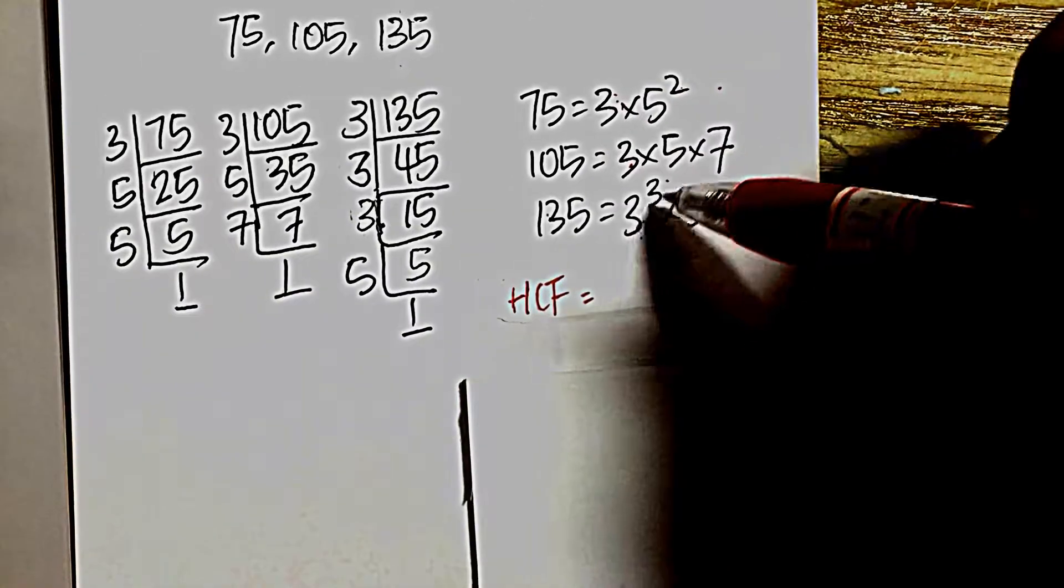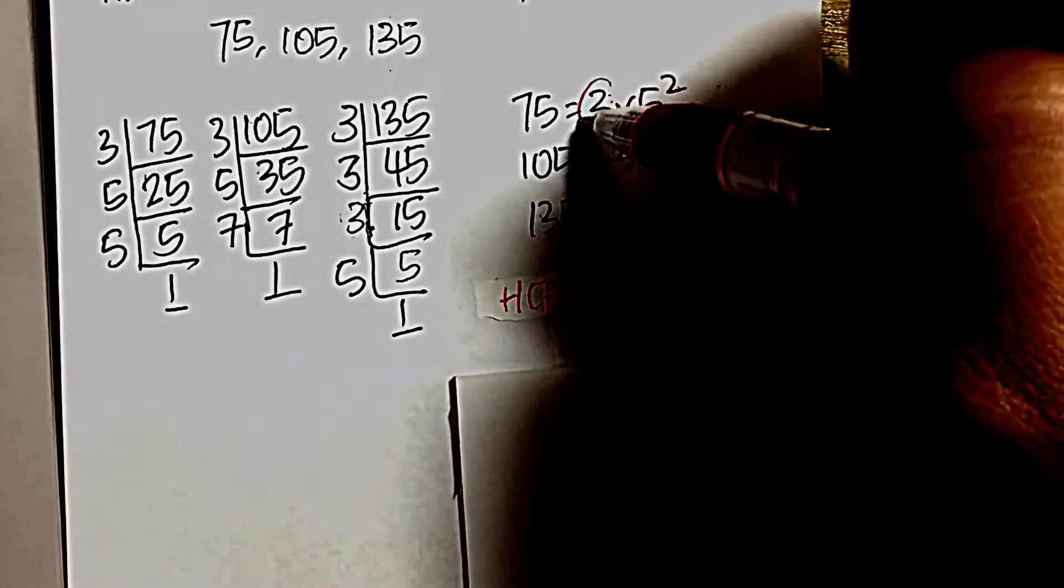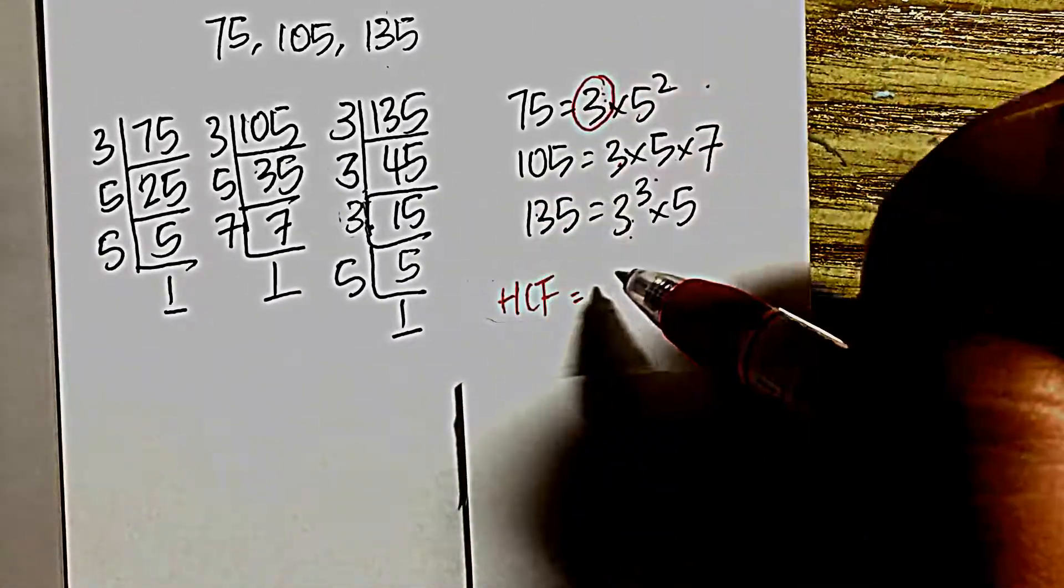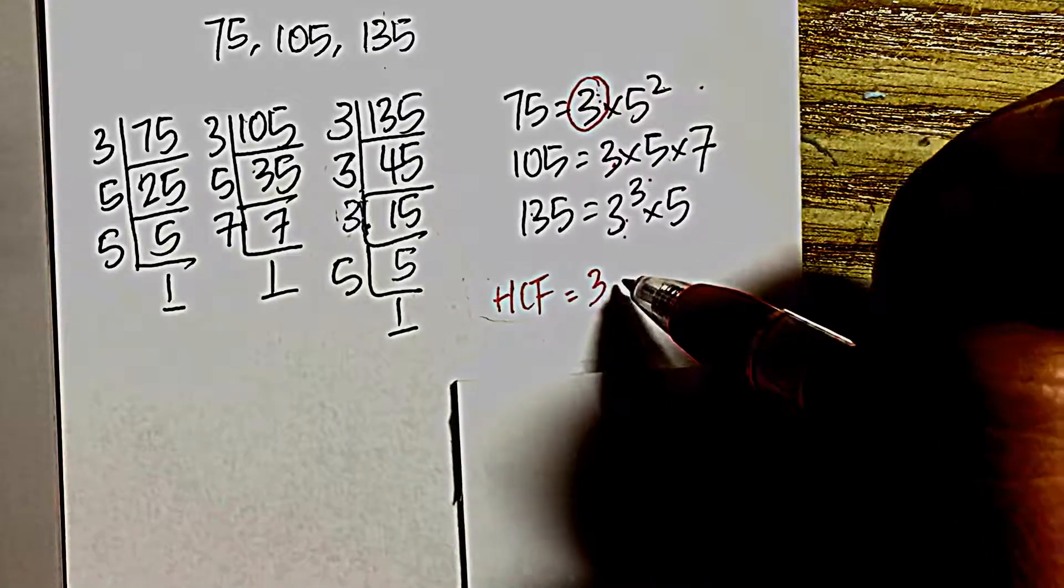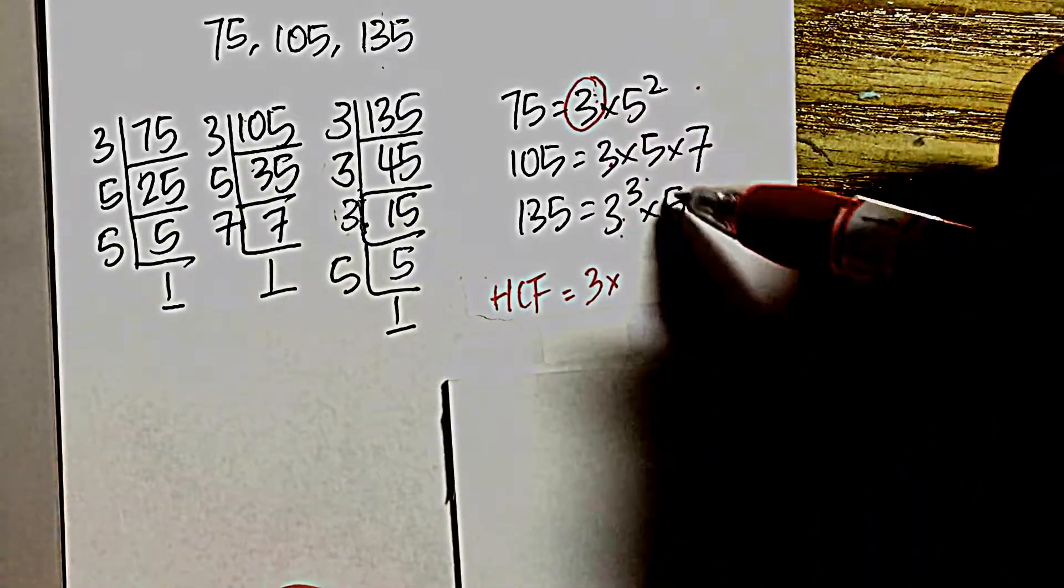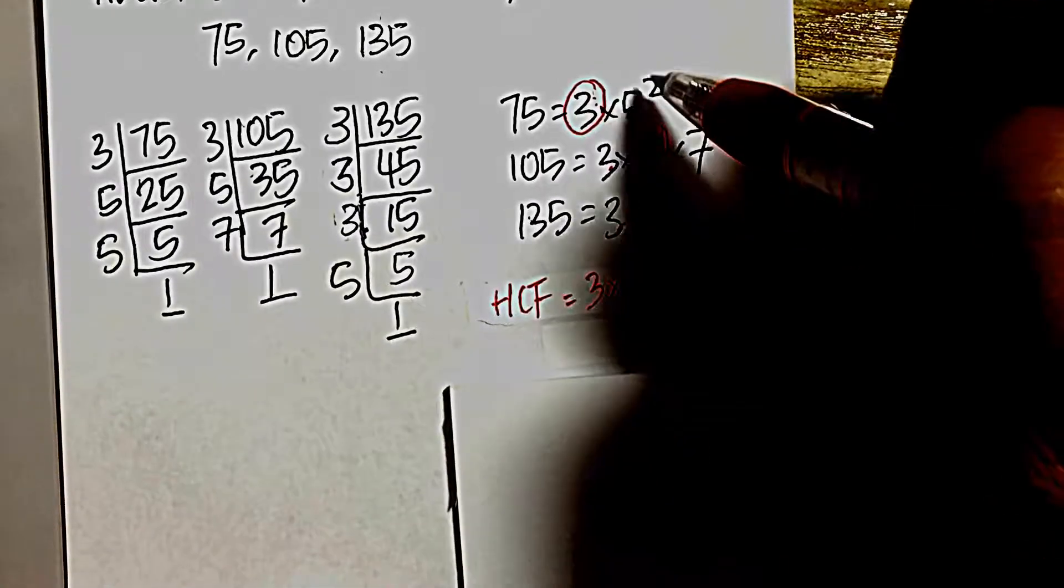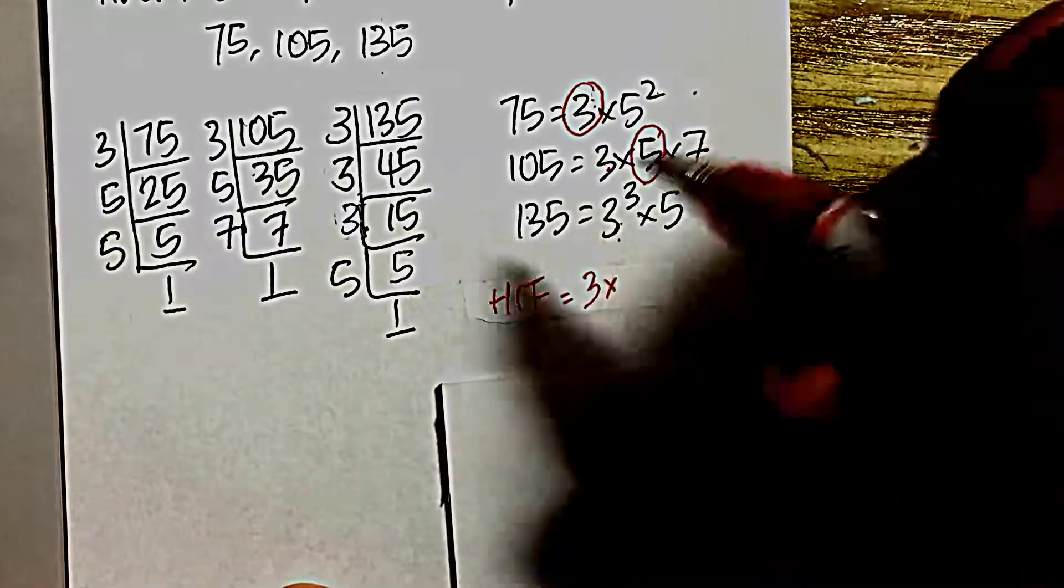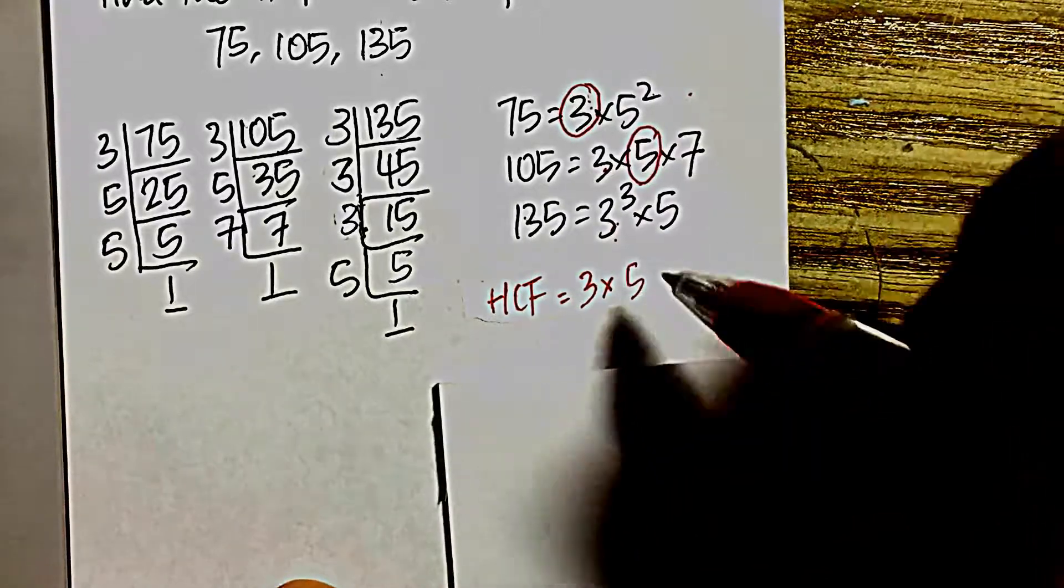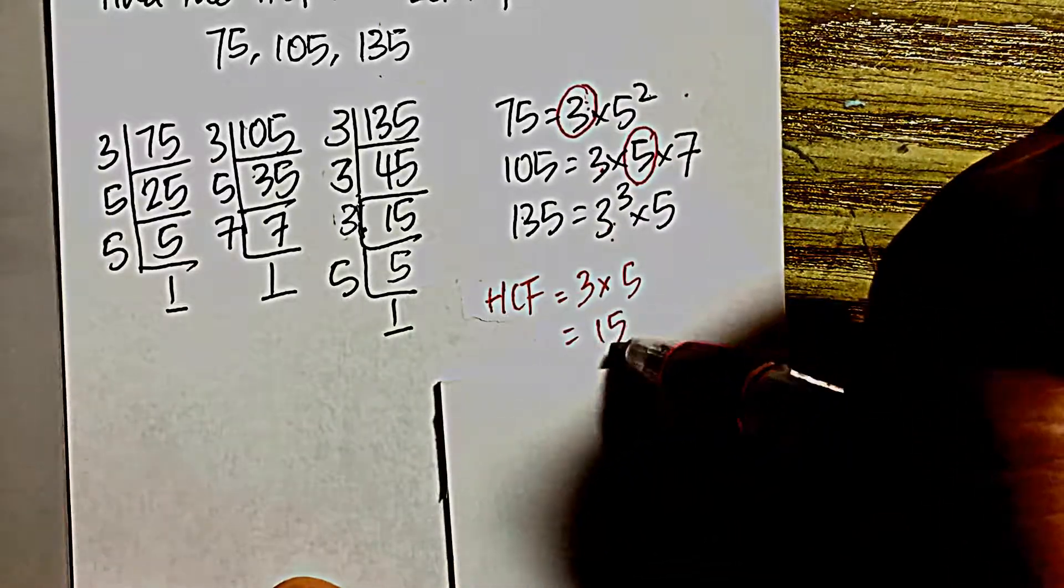we have 3, 3, and 3 cubed, so the highest common factor would be a single 3. Next, we have 5 squared, 5, and 5, so the highest number of 5 that is common across the three numbers is a single 5. Therefore, the HCF is 15.